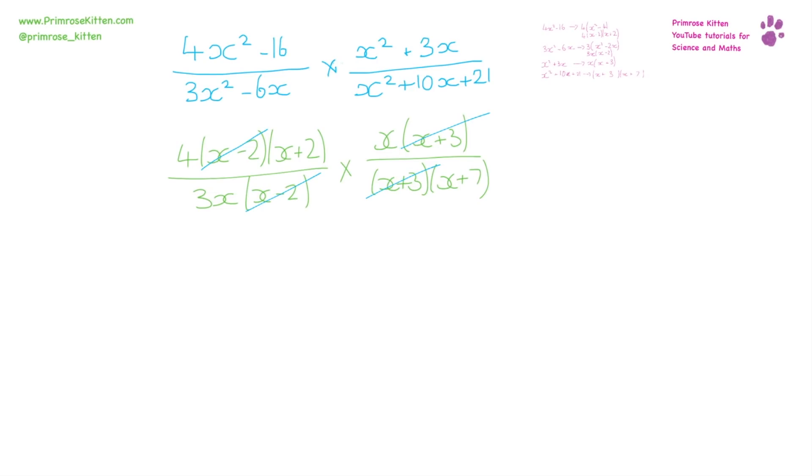So our new equation is now 4(x + 2) over 3x times x over (x + 7).